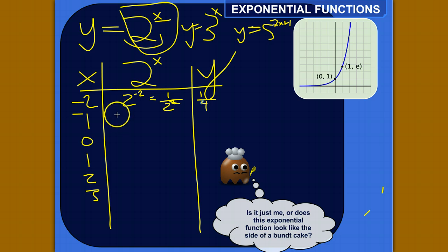What about plugging in negative 1 for x? It would be 2 to the negative first. That would be equal to 1 over 2 to the first, which is equal to 1 half. 2 to the first is just 2, so 1 over 2.